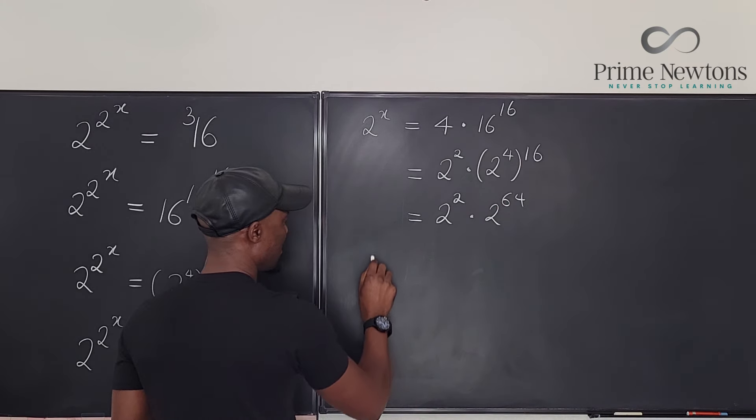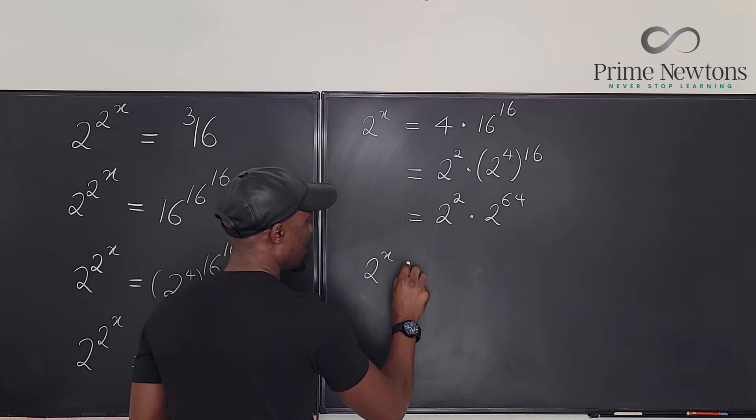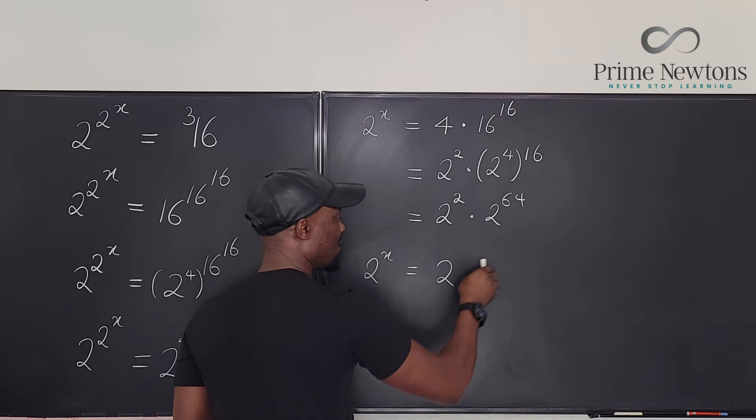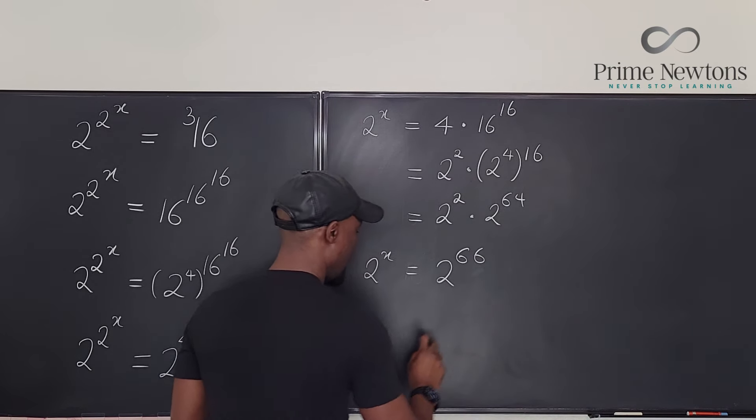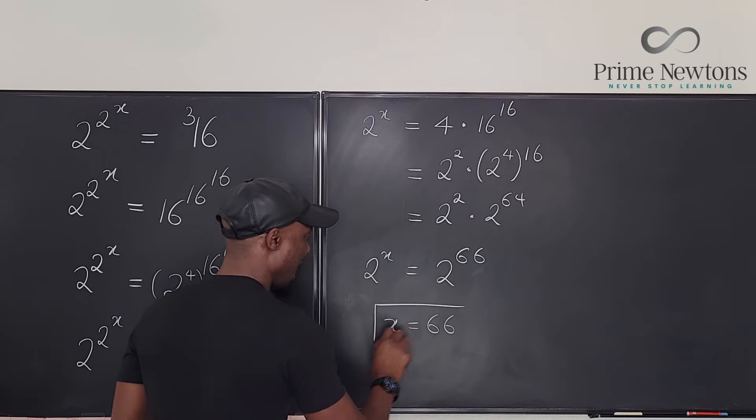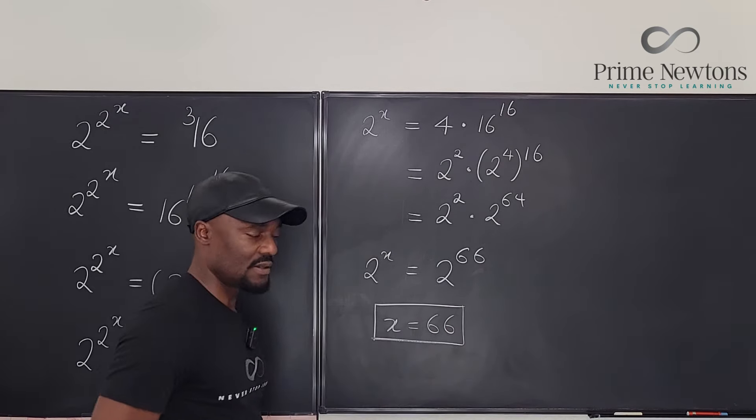So here I have 2 to the x equals 2 to the, we add the exponent, it's going to be 66. And that tells you that x is equal to 66. That is the way you answer this one.